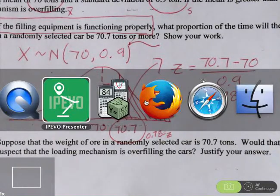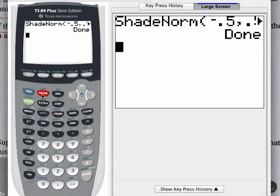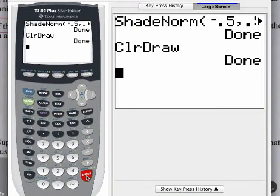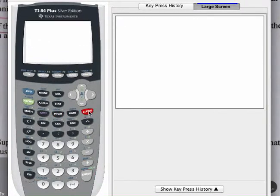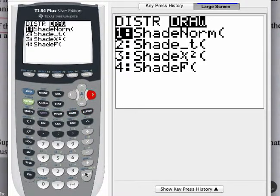We'll switch over to the calculator. Notice, I purposely left it this way. I have not cleared the previous drawing. It is important to go back to the home screen, second mode. We need to clear the drawing. That is second, program, and then enter twice. There we go. Clear the home screen again. Now we'll go to the shade norm command, second variables. Press the right arrow to the draw menu. There's the shade norm command.